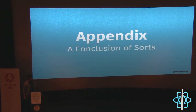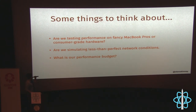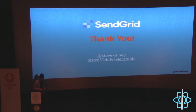Conclusion: when testing performance, think about whether you're on a $3,000 MacBook Pro — Chrome has tools to throttle to slower, real-people modes. Simulate less-than-perfect network conditions. Set a performance budget: what is your current performance, and at what point will you reject a pull request? Start with 'don't make it slower' before you try to make it faster. In review: build for production, profile before you do anything, don't do stuff you don't have to, prefer primitives, and keep your state lean and mean. Thank you.